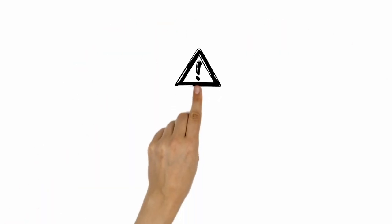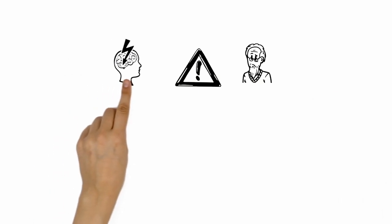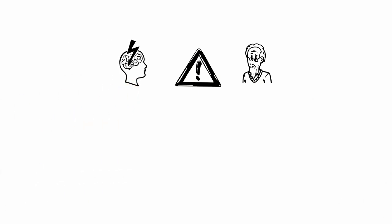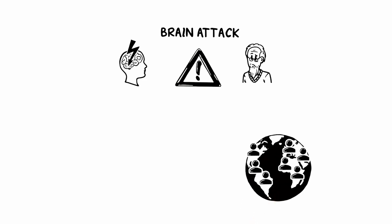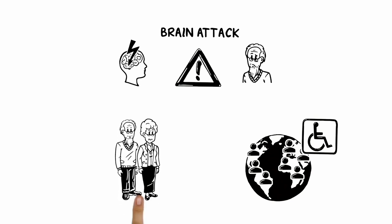Take action! Mike's grandfather might be having a stroke, also called a brain attack. Strokes are the second largest cause of death worldwide and also one of the largest causes of disability. They mainly happen in older people, but they can sometimes happen to younger people too.